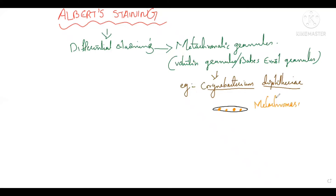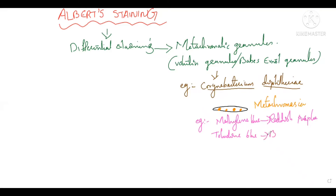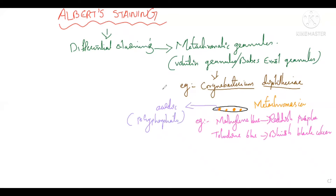These inclusion bodies show a property known as metachromasia — when stained with one stain, they appear in a different color. For example, if you stain metachromatic granules with methylene blue, they appear reddish-purple. If stained with Toluidine blue, they appear bluish-black. Albert stain mainly contains Toluidine blue for staining metachromatic granules.